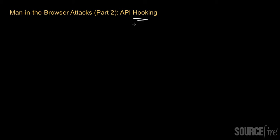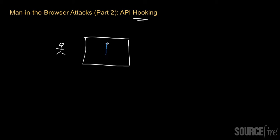The best way to explain API hooking is by diving in and giving a concrete example. Imagine you have a user on their computer, and their computer has a web browser on it — I'll mark the web browser in blue. In this particular case, let's say they're using Internet Explorer as their web browser, and they're using Internet Explorer to connect to the internet, which we'll label as a cloud.